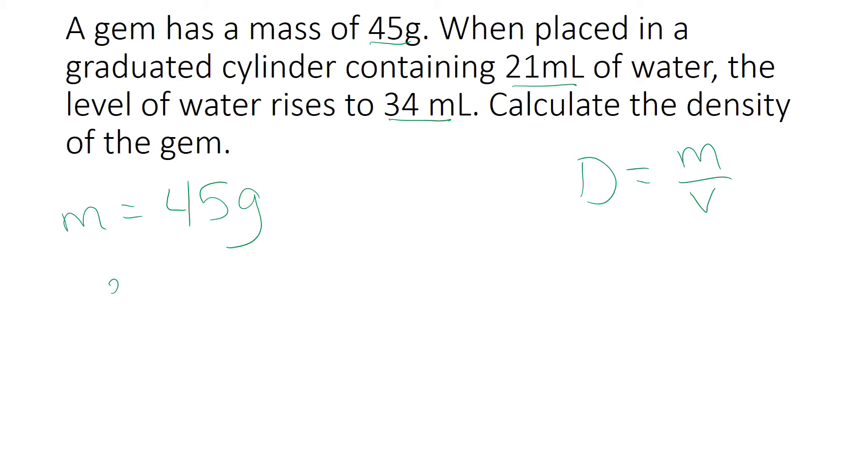And to find the volume, we need to take the final volume minus the original volume, and that will tell us how much it was displaced, and therefore the volume of the gem. So when you subtract 34 from 21, you get 13 milliliters equals your volume.